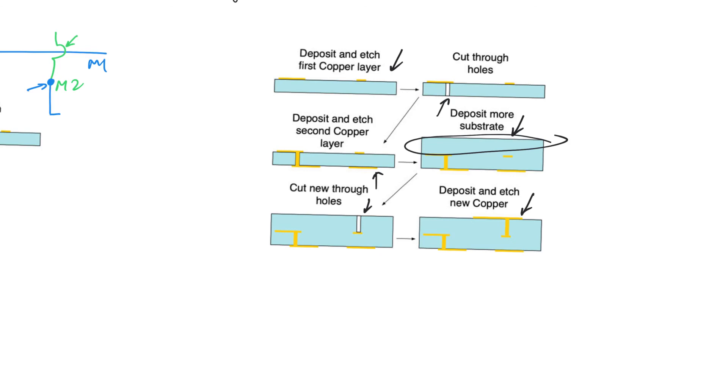Sometimes, you don't actually deposit more PCB insulator on top what you happen to do is you have another PCB and then you solder them together or you glue them together. But, in any case, the analogy with ASICs is very clear.